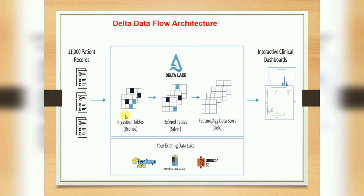In the Bronze layer, raw data is stored first. Then all junk data is filtered and transformations are applied; the refined data is stored into Silver layer tables. After that, aggregations based on reporting layer requirements are done and stored into the Gold layer. The data ultimately stores in existing data lakes, but Delta Lake manages all tables — inserts, updates, and metadata — throughout.